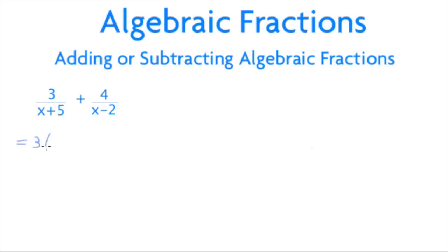In this example that means 3 becomes 3(x-2) and our 4 becomes 4(x+5), all over the same denominator of (x+5), not forgetting our brackets, and (x-2).